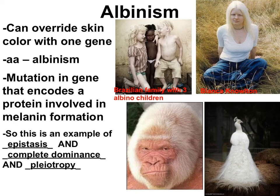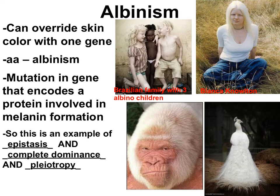You can't discuss skin color without thinking about albinism. Albinism isn't simply having all recessive alleles at the pigmentation loci — it's caused by a mutation in a protein involved in making melanin. If that protein is missing, it doesn't matter what's going on at the three pigment loci; the organism won't be able to make any pigment and will be albino. There are many examples of albinism throughout the animal kingdom — humans, gorillas, and peacocks. Since albinism is a disadvantage for camouflage, albino organisms usually don't survive and reproduce well in the wild.